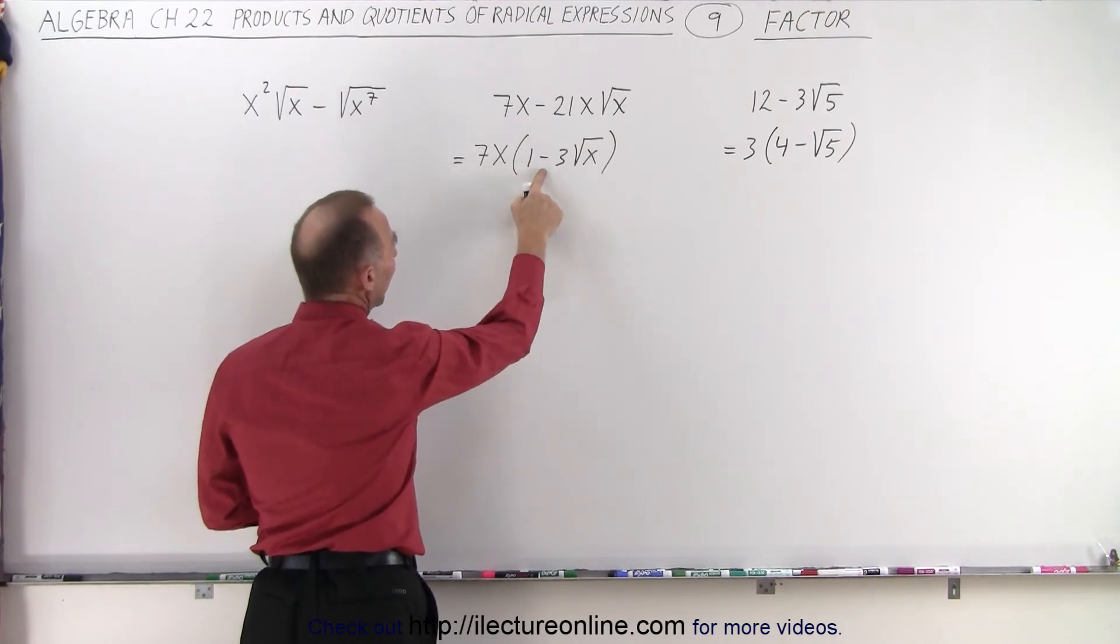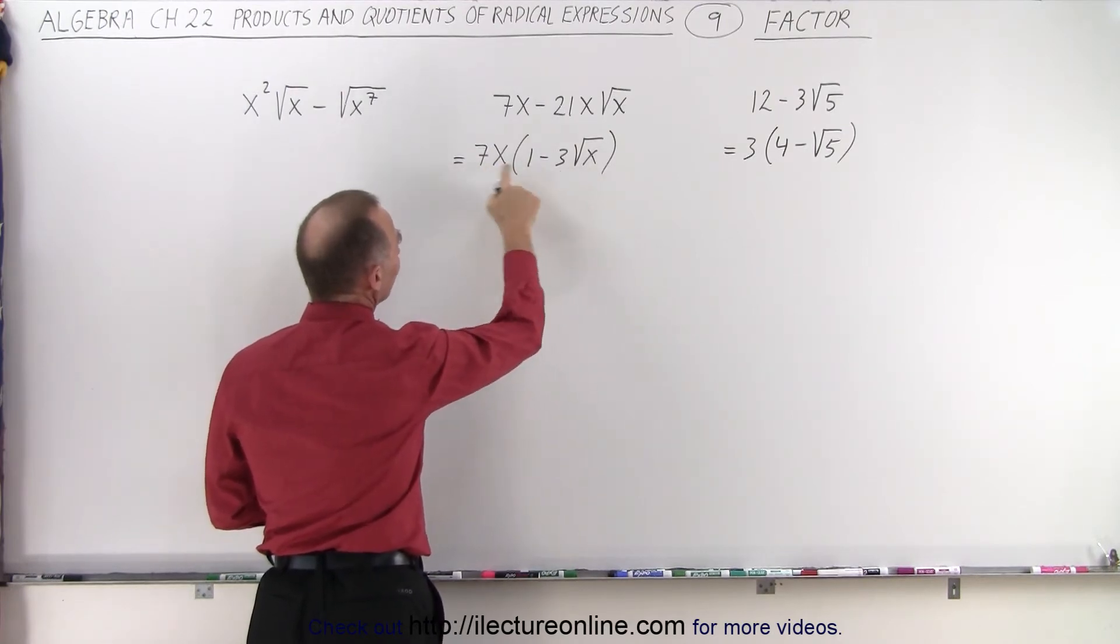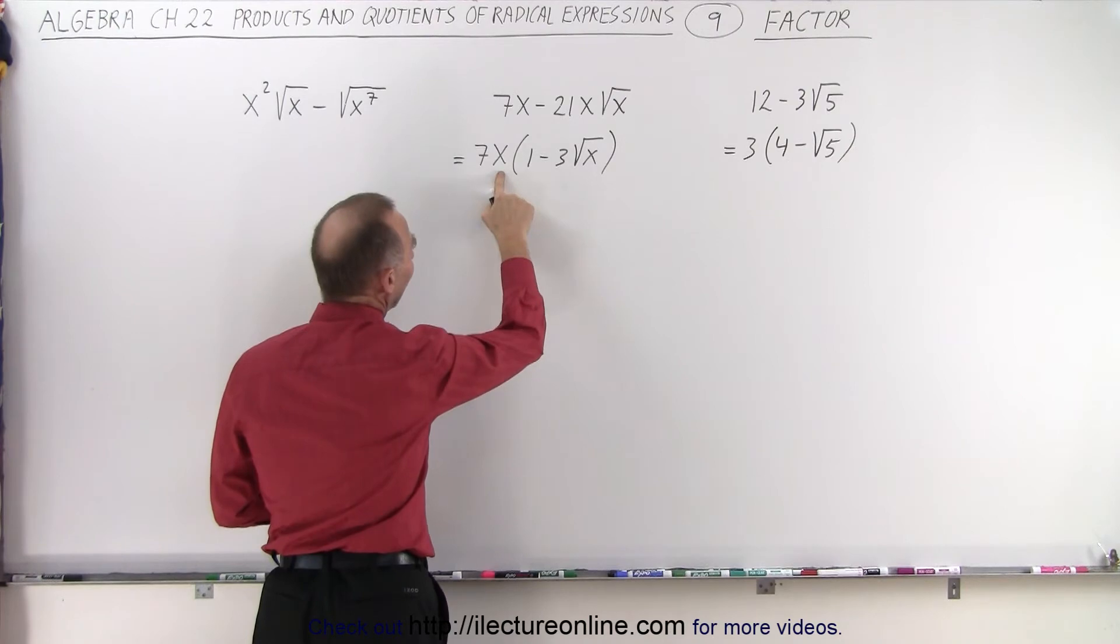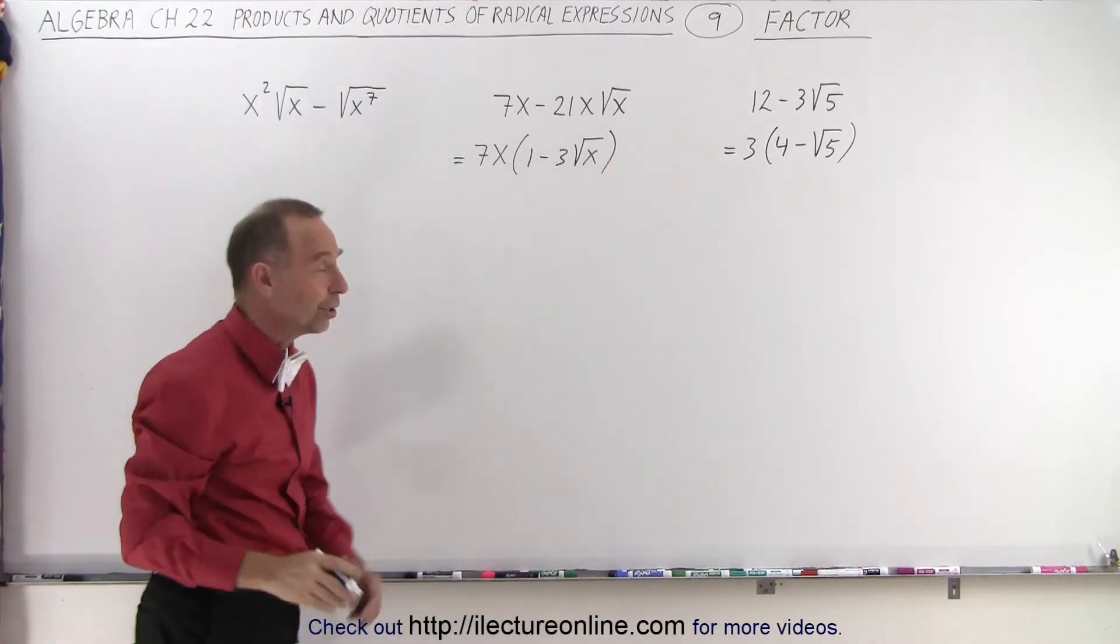So 7x times 1 gives us 7x, and 7x times minus 3 times the square root of x gives us minus 21x times the square root of x, which is what we have. So it looks good.